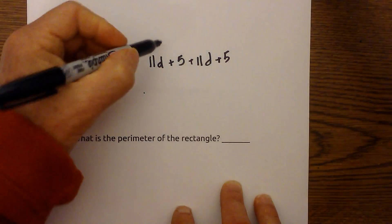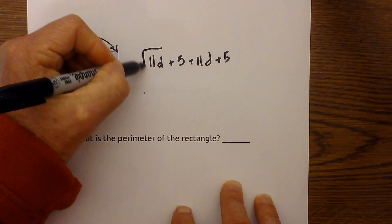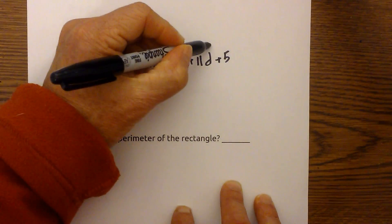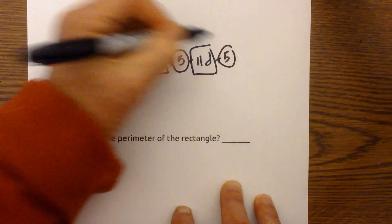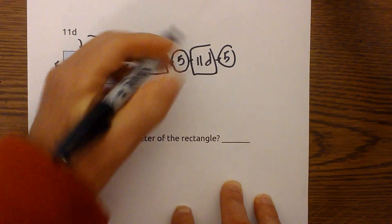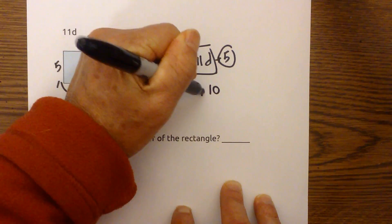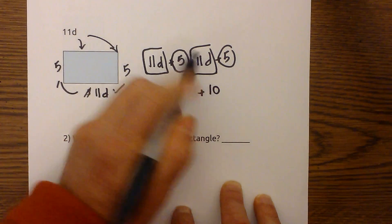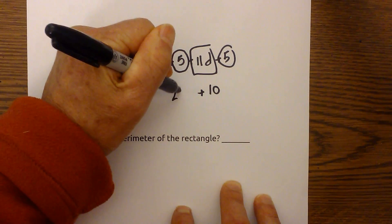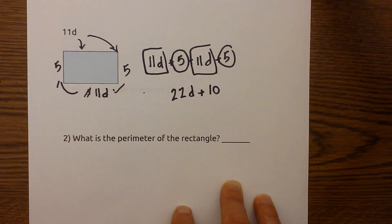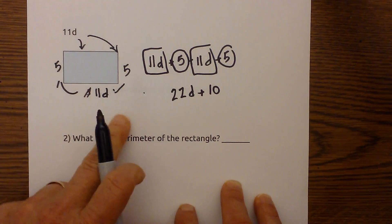We can combine like terms — I'll put a box around the like terms. Adding the 5s gives us 10, and 11d plus 11d gives us 22d. So the perimeter of the rectangle is 22d plus 10.